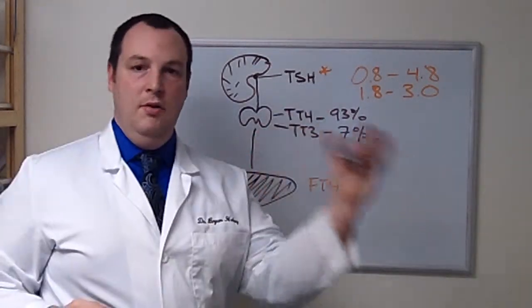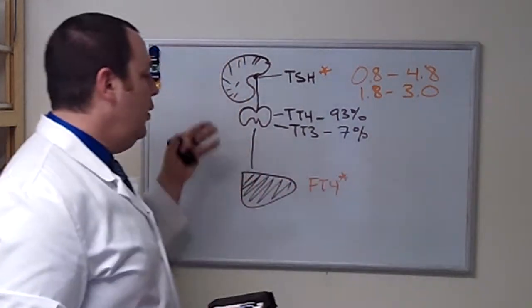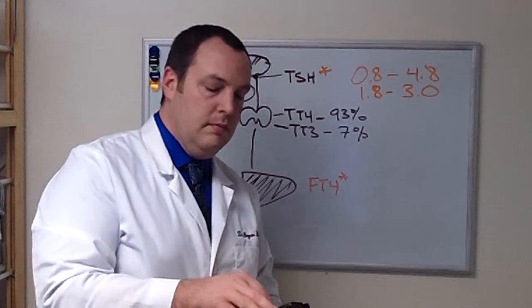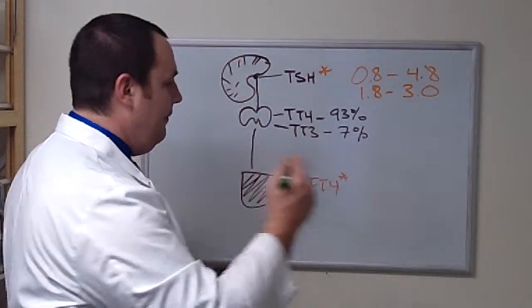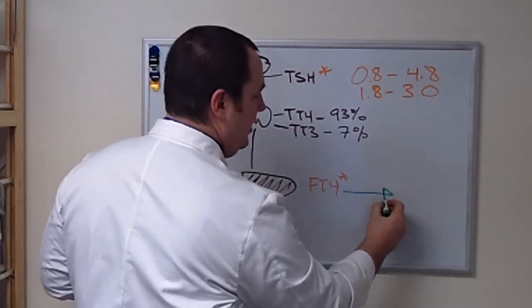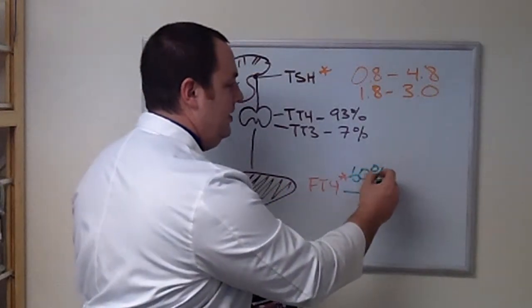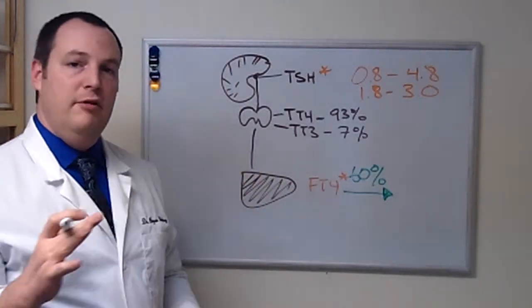Now this total portion is protein-bound. We get this protein cleaved away to get free T4. A good majority of this happens in the liver - about 60% of this process occurs in the liver. So what does that mean? We need good liver function.